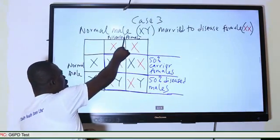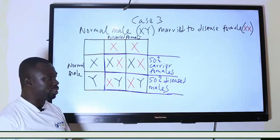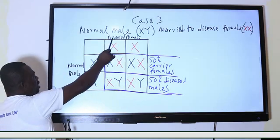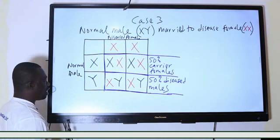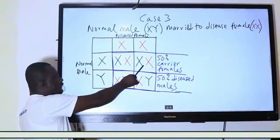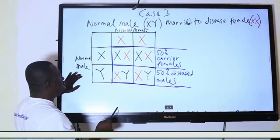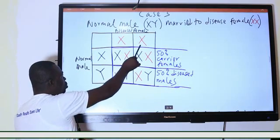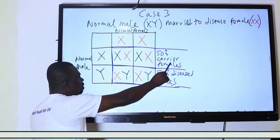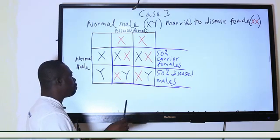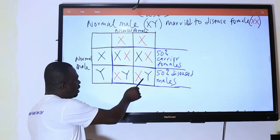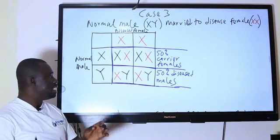Case three: a normal male married to a diseased female, where both X chromosomes of the female are affected. The possible outcomes from the crossing are: two carrier females — giving 50% carrier females — and two diseased males — giving 50% diseased males.